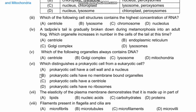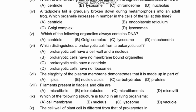Question 7: The elasticity of the plasma membrane demonstrates that it is made up in part of — options: lipids, nucleic acids, carbohydrates, proteins. The elasticity of the plasma membrane is due to lipids. So our right option is A — lipids.